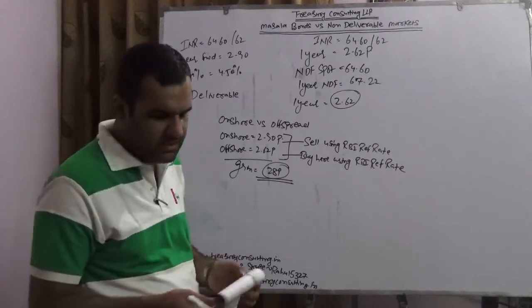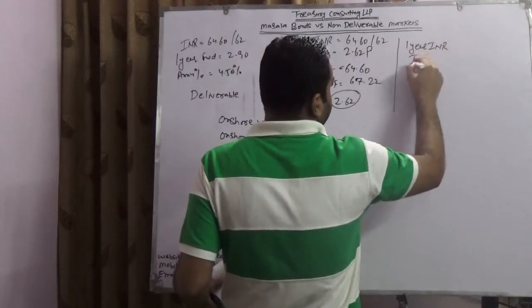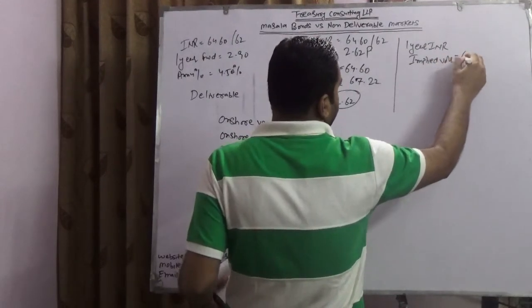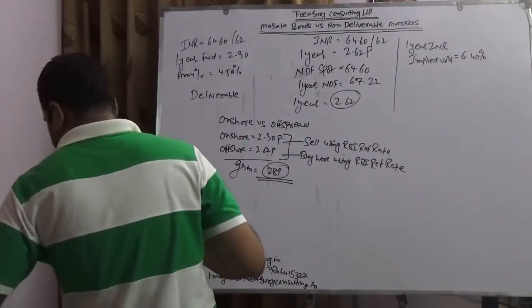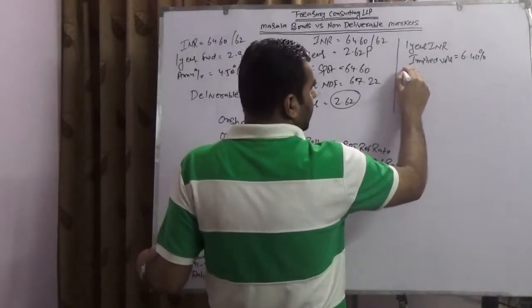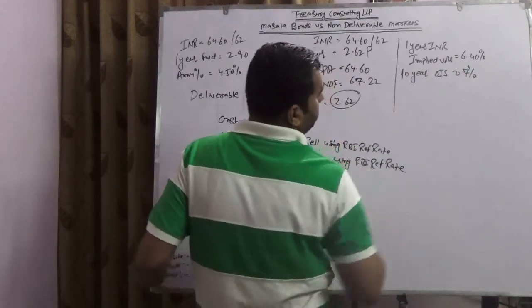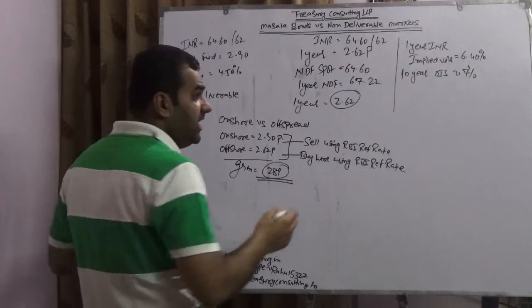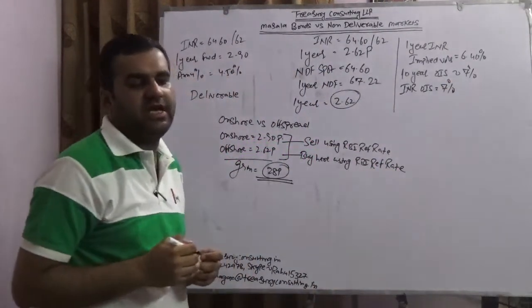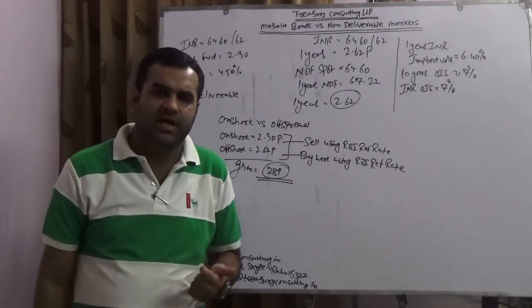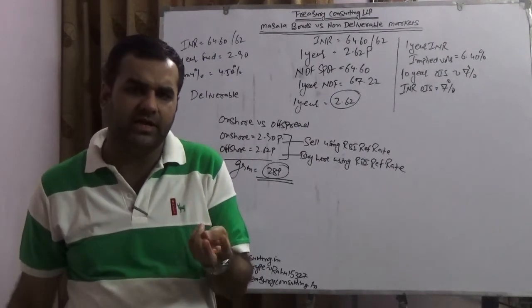Because Reliance would have international subsidiaries as well, this is one part which a Masala trader looked at. Another part which a Masala trader looked at is the one-year Indian rupee implied volatility, which is currently trading at 6.4%, while the 10-year OIS is approximately 7%. What is OIS? Hedging in local currency, in local country, in local currency books.